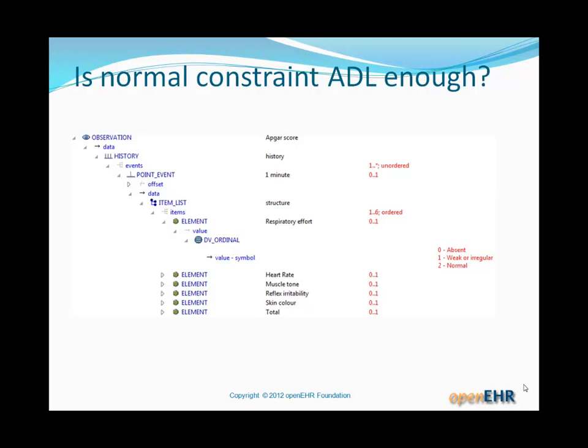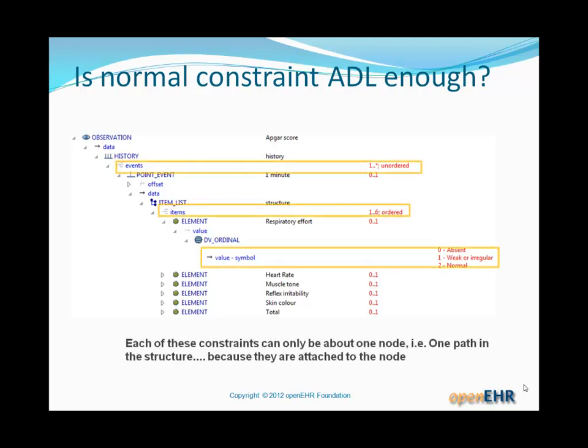Let's just have a look at a normal archetype — that's our old friend the Apgar score archetype, shown in its technical form with the classes and properties down the left-hand side. Knowing everything we know about ADL so far, are there any limitations? All of those parts marked on the picture are constraints which are limited to just the node that they're stated on. The constraints in red on the right-hand side — for example, 1 to star unordered on the events attribute of the history class — can only be about that attribute.